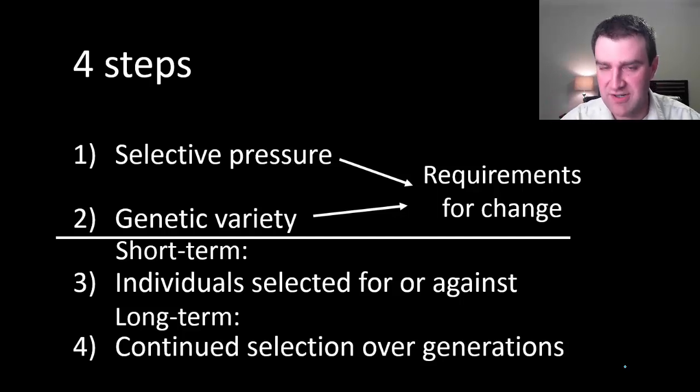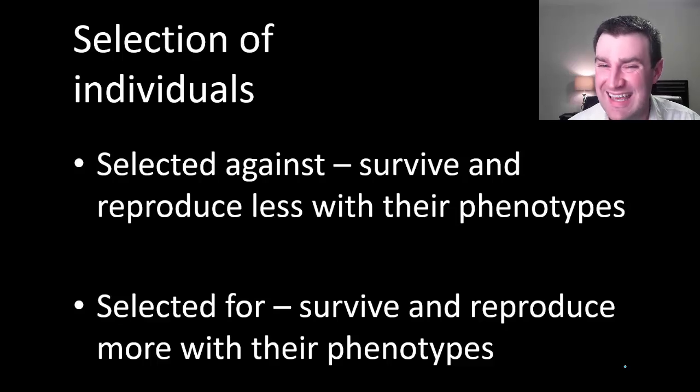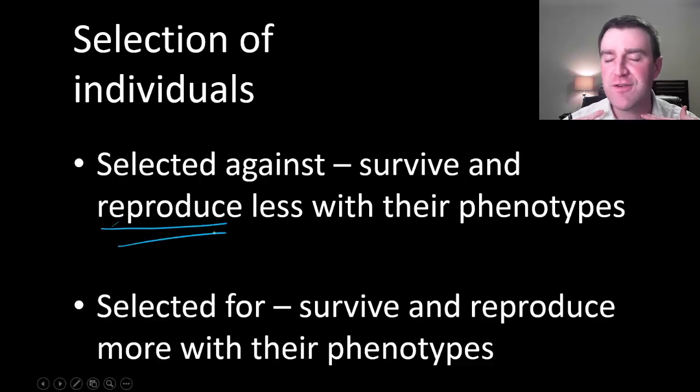If you have a selective pressure and you also have genetic variety, then you can start thinking about selection. Let's talk about what it means to be selected for or against. If you are selected against as an individual, we're saying that whatever traits you have make you less likely to survive, and most importantly, less likely to reproduce. You're producing fewer offspring. You're passing on your genes less often to the next generation. And that's really the crucial thing you need to say.